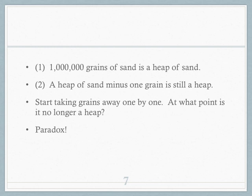Any heap that you've got — whether it's a million grains, a million and one, five million, a trillion — any heap, not just the million-grain heaps: any time you've got a heap, regardless of how many grains of sand it has, if you just took one grain away, it would continue to be a heap. What is left would still be a heap. And that also seems correct.